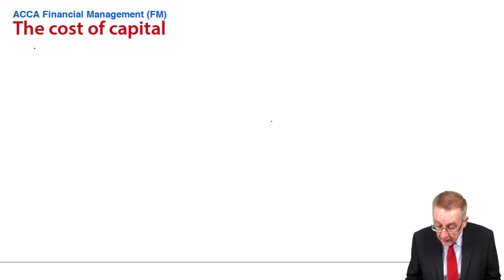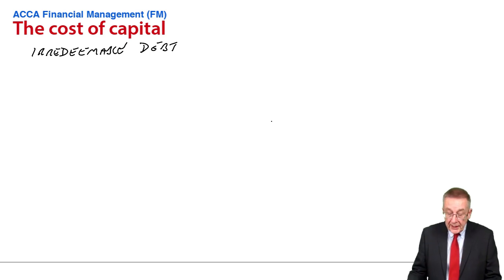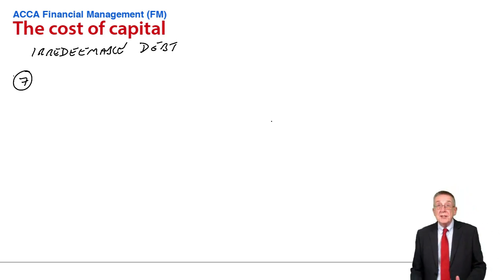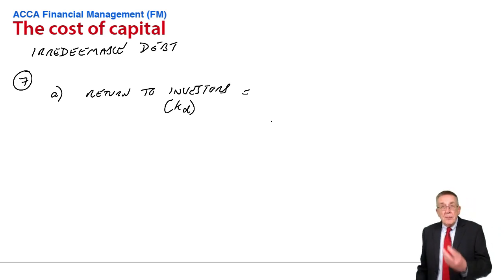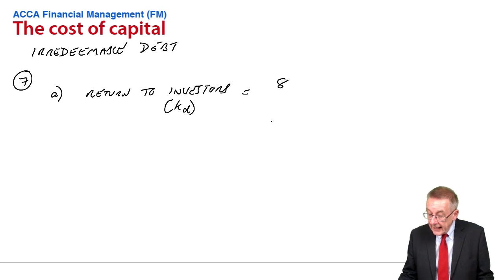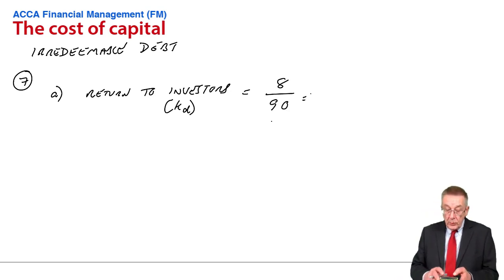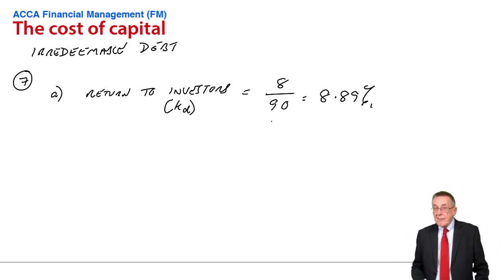Let me show you what I mean. First of all, with irredeemable debt. Irredeemable debt, remember, is debt that's never repayable. Look at example 7. FPL C has in issue 8% irredeemable debentures quoted today at 90. What's the return to investors? Well, surely, if you were buying these on the stock exchange, you'd pay 90. You're expecting to get the coupon rate $8 a year interest. So you're effectively getting $8 a year on a market value of 90, which is 8 divided by 90, 8.89%. That's the return to investors.